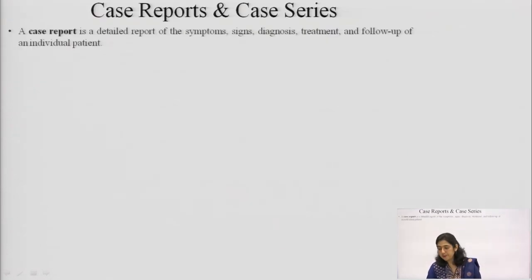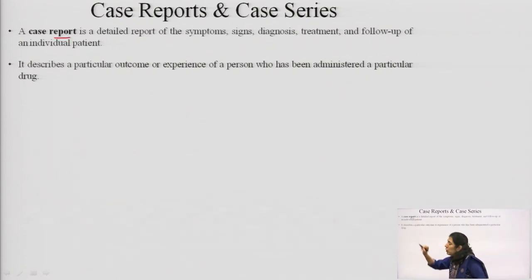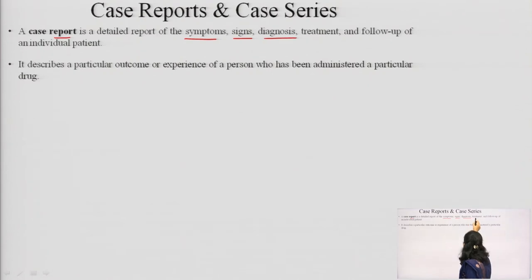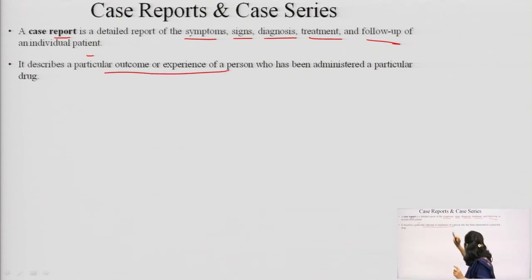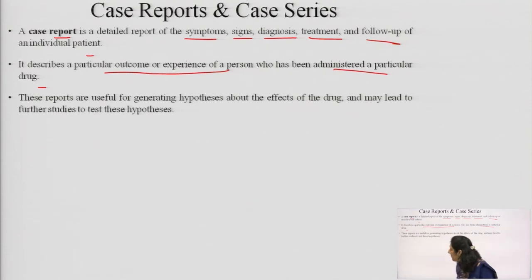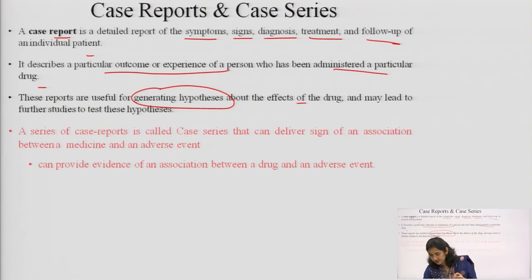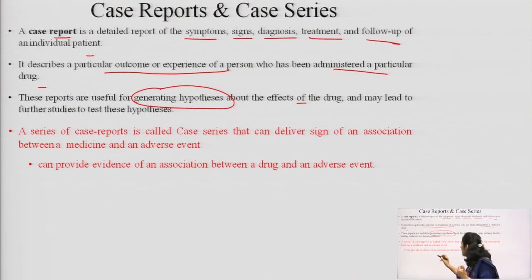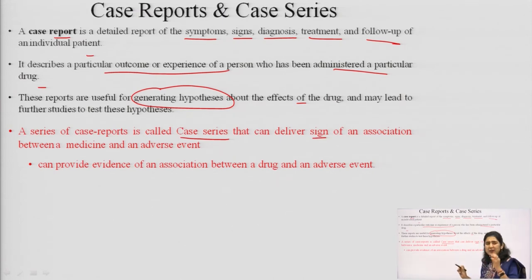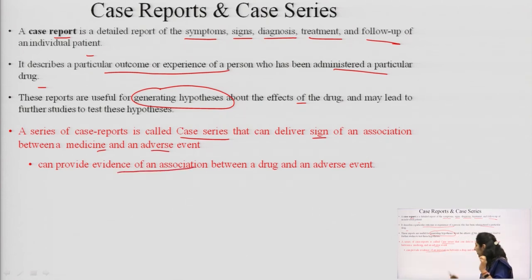Pros of intensified reporting: it covers the whole population, detects signals of new rare or serious ADRs, is most commonly used, relatively inexpensive, and least labor-intensive. Cons: reporting still doesn't always happen, reporting bias remains, and it is difficult to detect delayed ADRs. The next type of passive surveillance method is case report and case series. A case report is a detailed report of symptoms, signs, diagnosis, treatment, and follow-up of an individual patient. It describes the outcome or experience of a person given a particular drug. These reports help in generating hypotheses about the effects of the drug and lead to further studies to test the hypothesis.